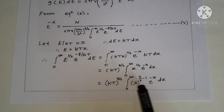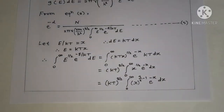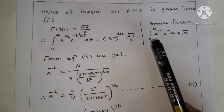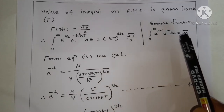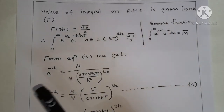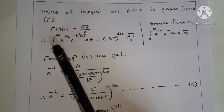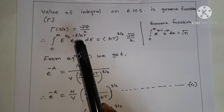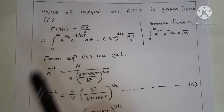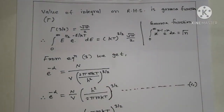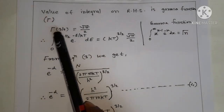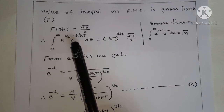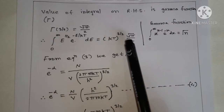So the integral from 0 to infinity becomes kT raised to 3/2 times the integral from 0 to infinity of x raised to (3/2 minus 1) times e raised to minus x dx. This integral on the right-hand side is a Gamma function. The standard form is integral from 0 to infinity of x raised to (n minus 1) times e raised to minus x dx = Γ(n). So here Γ(3/2) = √π / 2. Therefore the integral from 0 to infinity of e raised to 1/2 times e raised to minus e upon kT de equals kT raised to 3/2 times √π / 2.